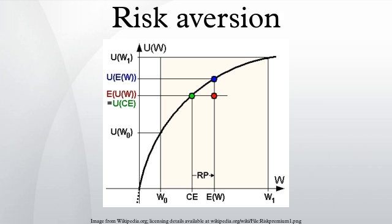Risk neutral, if he or she is indifferent between the bet and a certain $50 payment. Risk loving, if he or she would accept the bet even when the guaranteed payment is more than $50. The average payoff of the gamble, known as its expected value, is $50. The dollar amount that the individual would accept instead of the bet is called the certainty equivalent, and the difference between the expected value and the certainty equivalent is called the risk premium.